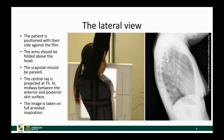Another important thing regarding the scapulae is that they should be parallel — that's very difficult and takes a lot of experience so that the scapulae appear parallel on the image. The central ray is again projected at the level of the fourth thoracic vertebral body, but must go through midway between the anterior and posterior skin surface of the patient. The image is taken with the patient in a deep breath.